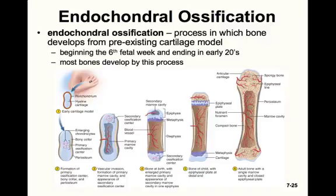This region is called the primary ossification center, where blood vessels penetrate the new bone tissue. Osteoclasts in the marrow cavity widen the cavity by dissolving calcified cartilage remnants. A secondary ossification center then develops in the epiphyses of the bones. The bone covers the cartilage, growing along the length from the primary ossification center, while the secondary ossification centers in the epiphyses grow toward the bone.